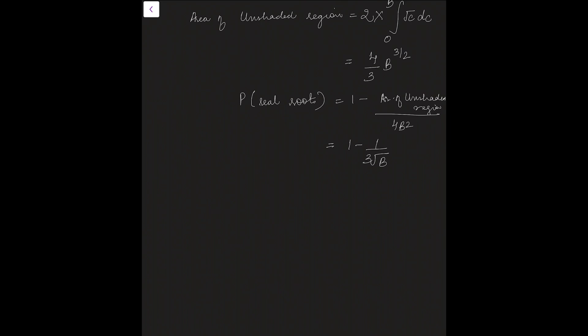Now, as we take b to infinity, the probability that real roots for real roots tends to 1.